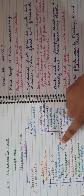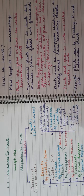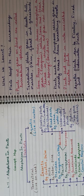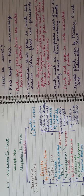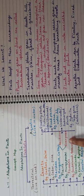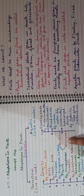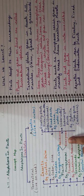Deciduous are the plants which shed the leaves during winter and get new leaves in the spring season. Evergreen trees are the trees that do not shed their leaves.